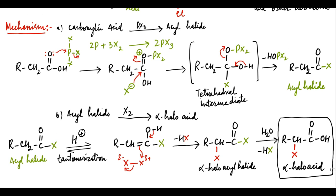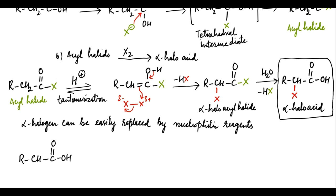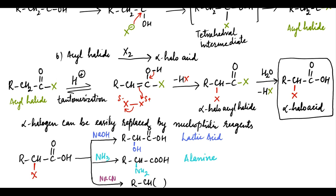The HVZ reaction has many applications. For example, the alpha-halogen can be easily replaced by nucleophilic reagents to give various useful substituted products, such as alpha-amino and alpha-hydroxy acids, which are of biochemical significance. On treatment with sodium hydroxide, the alpha-halogen is replaced by a hydroxy group to afford lactic acid. Similarly, on treatment with ammonia, the alpha-halogen is replaced by an amino group to afford alanine. Likewise, the alpha-halogen can be replaced by a cyano group on treatment with sodium cyanide, which on hydrolysis forms alkylmalonic acid.